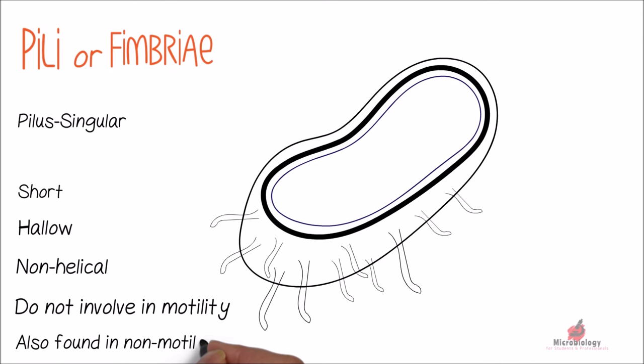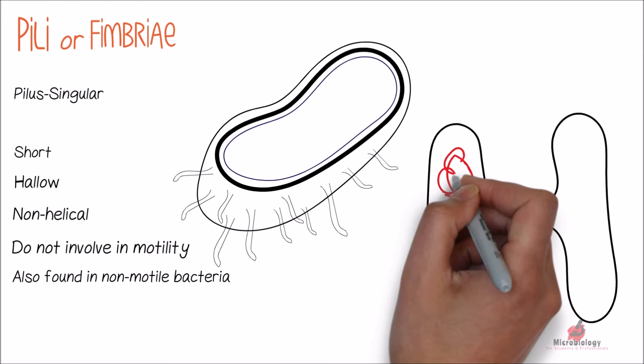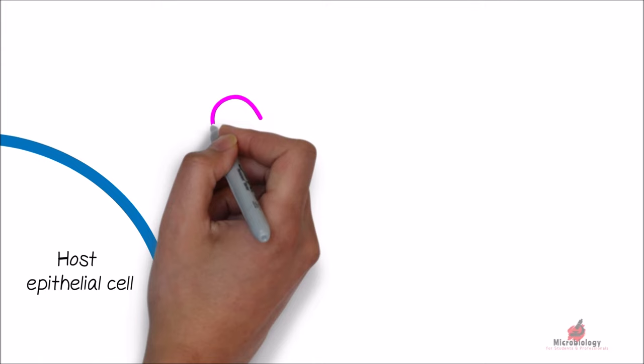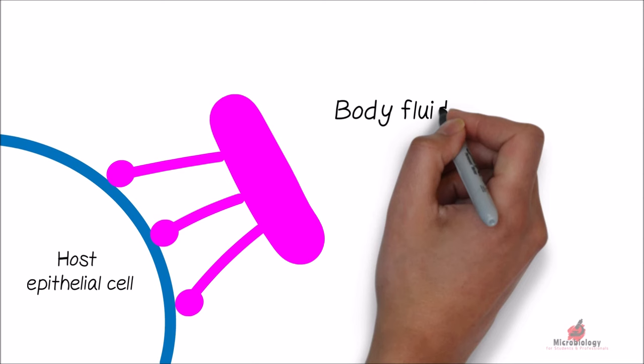Pilli serve as the port between the two bacteria to transfer the genetic material during the bacterial conjugation. These are known as F pilus. Some pilli help bacteria to attach to epithelial cells of host body during infections. This prevents the bacteria from being washed out by the body fluids and therefore spread the infection.